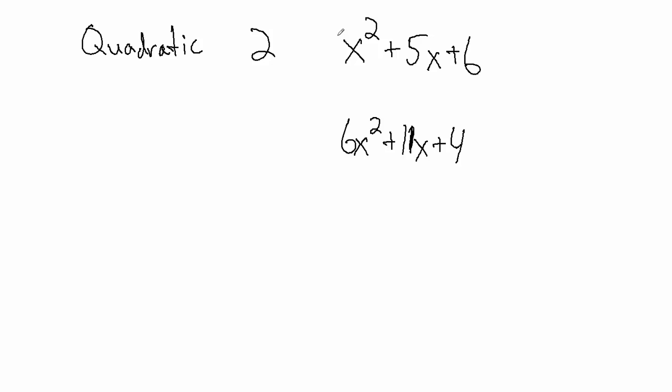Notice here this doesn't have anything in front of the x squared, so that's sort of like a one. If there's nothing in front of the variable, that just means a coefficient of one. Here there's a coefficient of six, so these are two different types. This number in front of the x squared is called the leading coefficient.